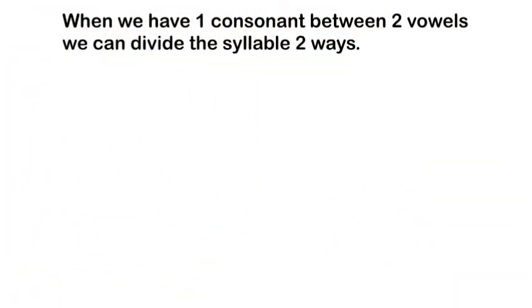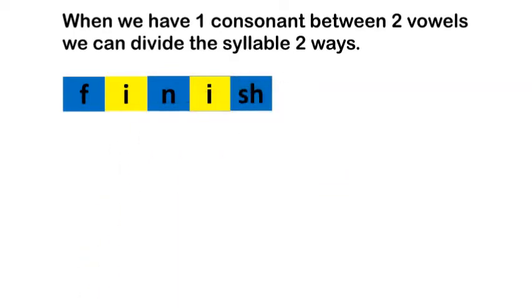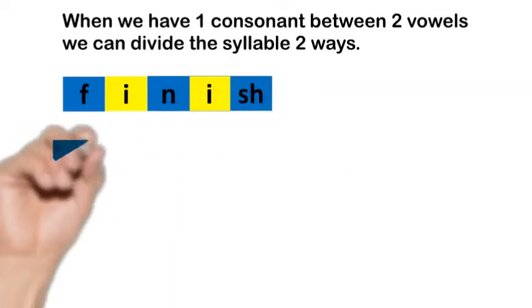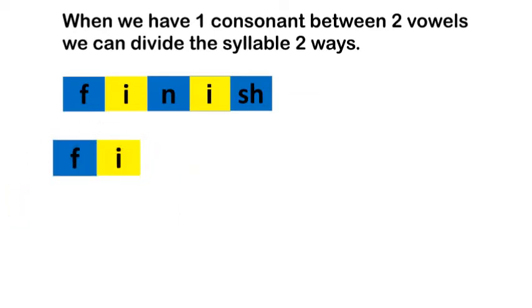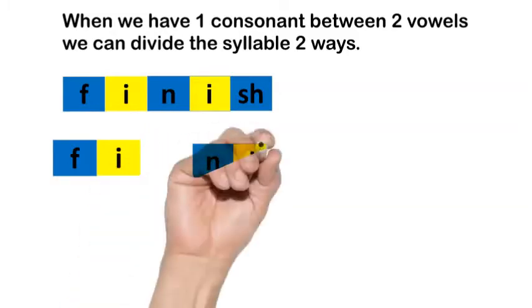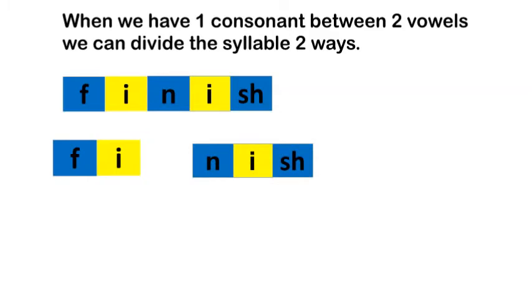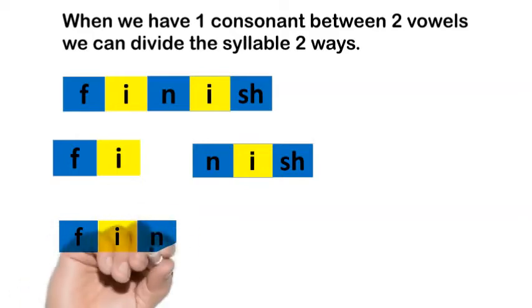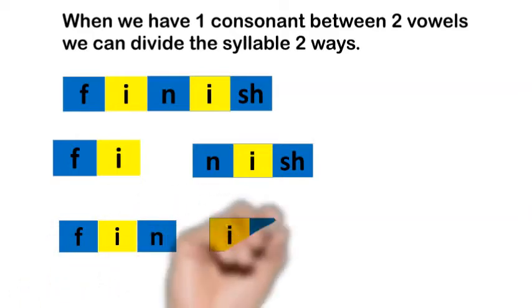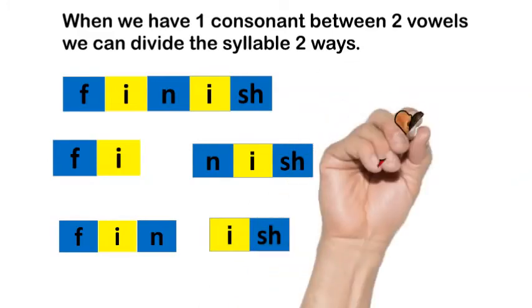Let's try to read another word with one consonant between two vowels. We have the word finish, F-I-N-I-S-H. We can first put the N with the second syllable and make an open syllable, fi. That would say fi. Now we put N-I-S-H together and we have nish — fi-nish. That doesn't sound quite right. So let's close in that syllable with the N. Now we have fin-ish. Fin-ish. That sounds right.